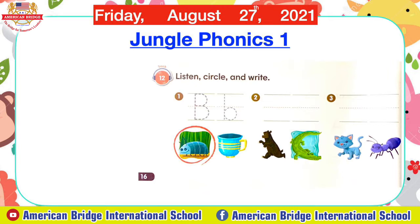Track 12 — listen, circle, and write. Number one: B — bug. Number two: A — alligator. Number three: cat.